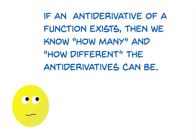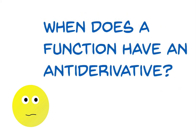So now we have our answer to the original questions. If an antiderivative of a function exists, then we know how many and how different the antiderivatives can be. But you may be thinking there's a very important question we've left out of this discussion altogether: when does a function have an antiderivative in the first place? Well, that's going to have to be the subject of another video.